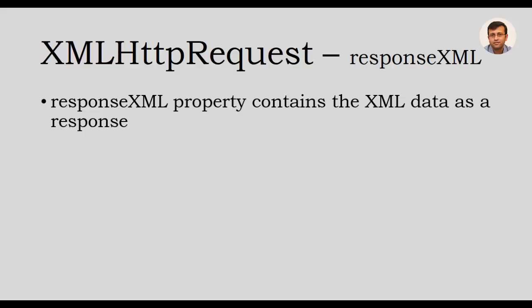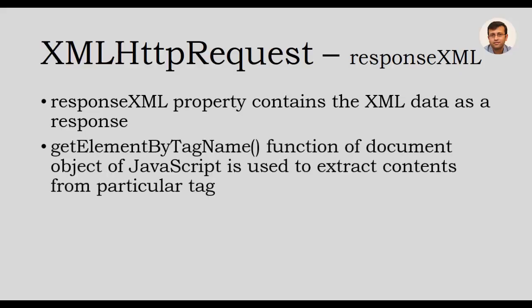We will also look at the responseXML property of the XMLHttpRequest object. The responseXML property is similar to the responseText property, but it contains the XML data as a response instead of raw data. The function getElementsByTagName of the document object in JavaScript is used to extract content from a particular tag inside the XML data. The XMLHttpRequest object contains several other properties and methods used for complex processing.